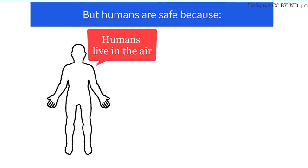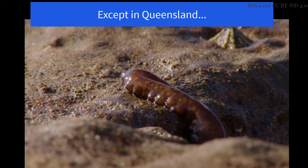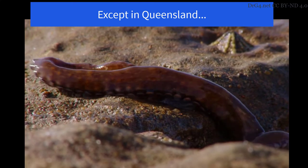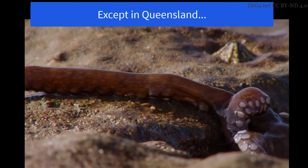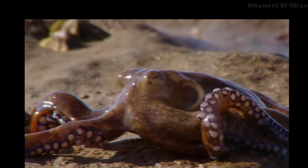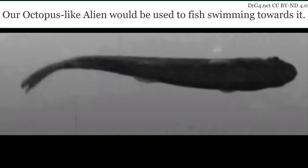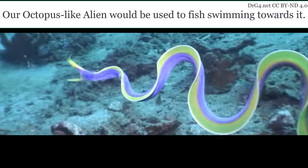But humans are safe because humans live in the air and octopuses live in the water, except in Queensland. Let us pretend the alien ambassador is a bit like a really weird octopus. Our monster could be an image around a bottle, and we could see if we can make our robot swim towards it like a fish.